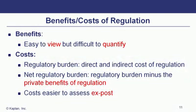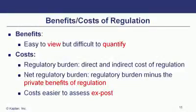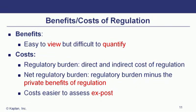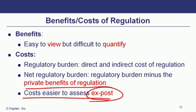The benefits and costs of regulation: benefits are essentially easy to view but very difficult to quantify. The regulatory burden includes a direct and indirect cost. There's a direct cost — the actual implementation of the regulation — and the burden on the private sector. The net regulatory burden is the regulatory burden minus the private benefits of regulation, compared to the cost of compliance of the regulated entity. These costs are easier to assess ex post, which is why many regulations may have sunset clauses requiring them to be revisited and renewed.